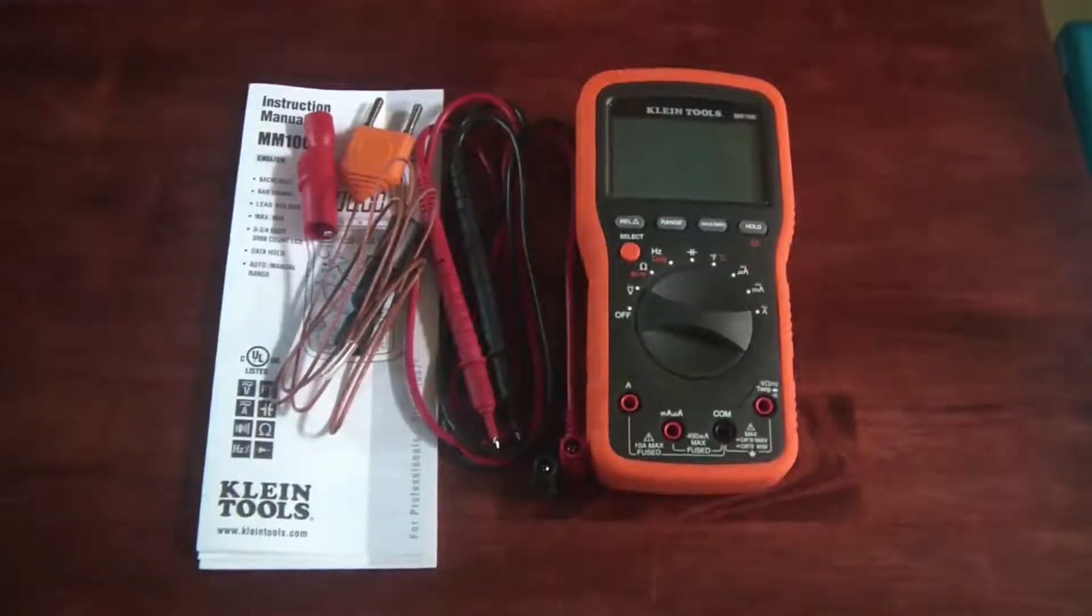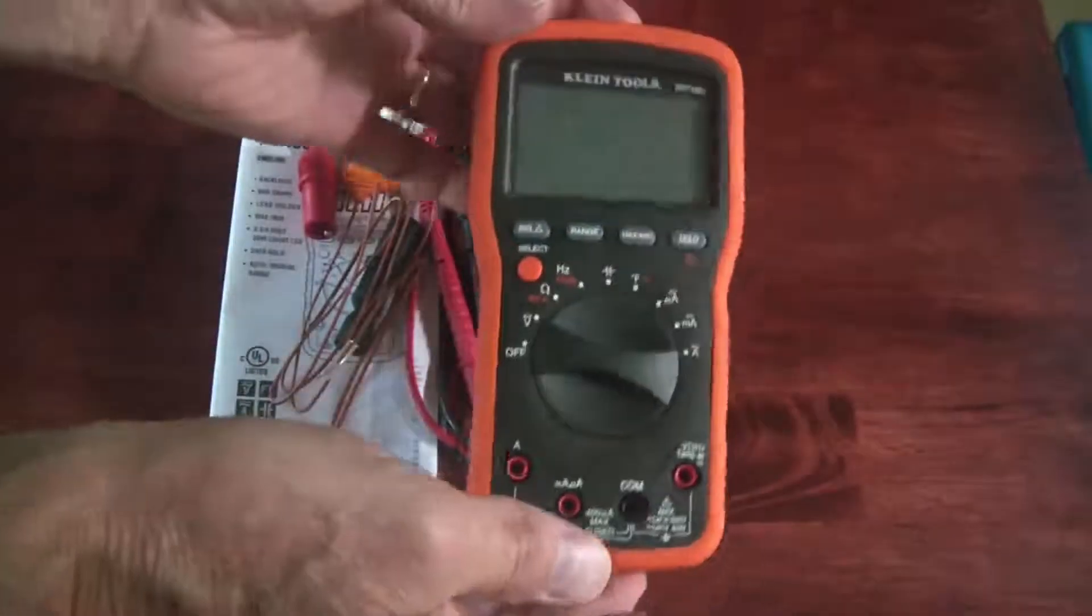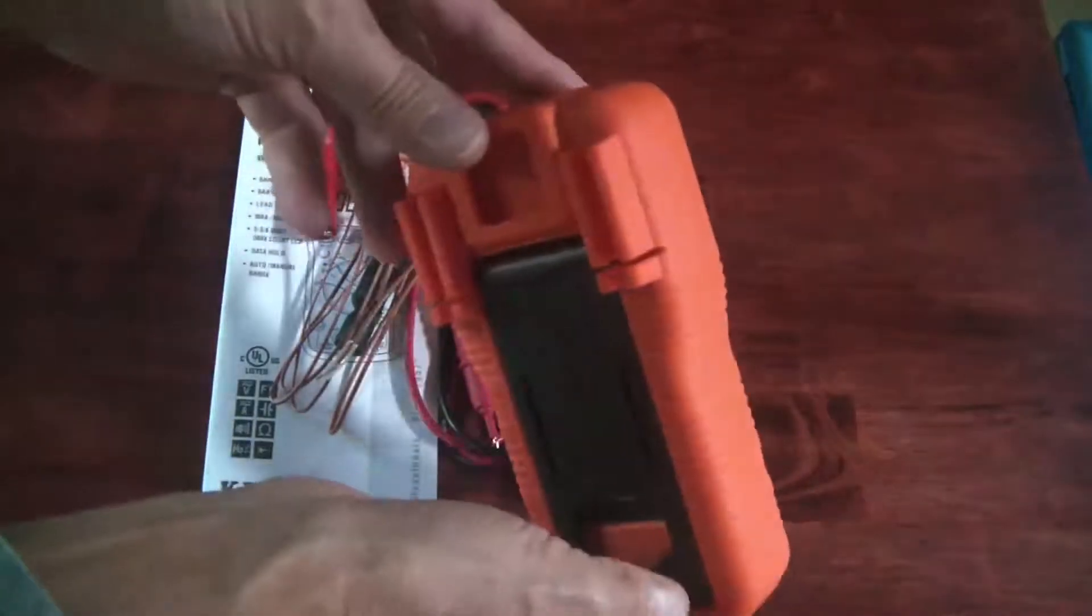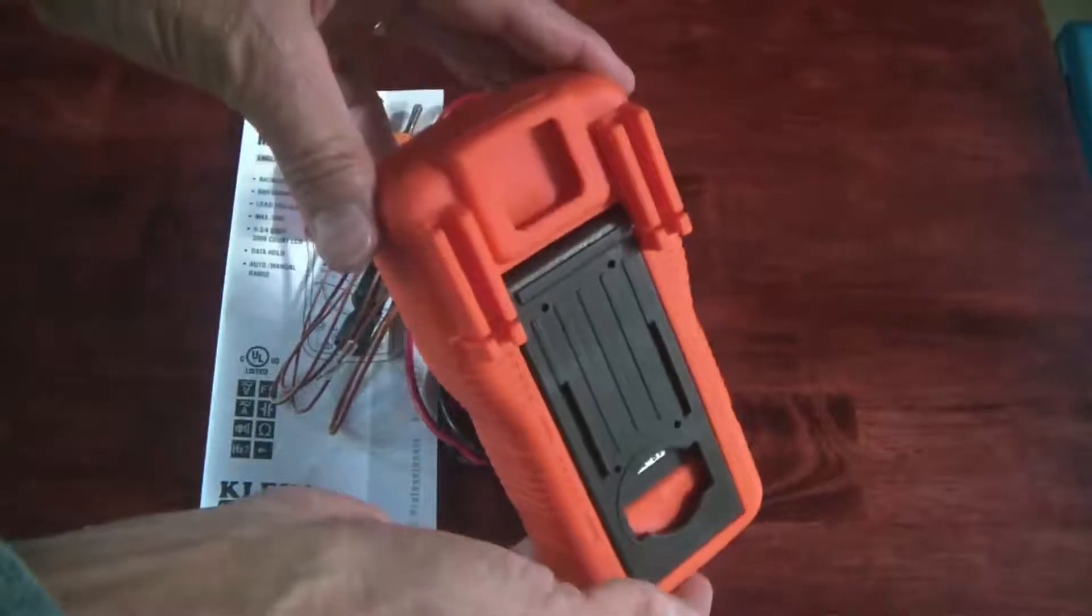Here is what's included. First of all, here is the MM-1000 and this is a rubber case over the instrument itself.